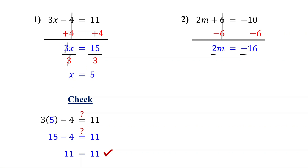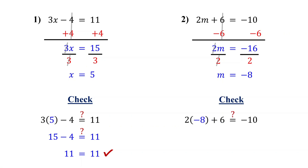Next, divide both sides by 2 to isolate m. On the left, the 2s cancel out, leaving m by itself. On the right, we get negative 8. So the solution is m equals negative 8. To double-check, plug in negative 8 for m in the original equation and simplify. 2 times negative 8 is negative 16, and negative 16 plus 6 is negative 10. Both sides match, so our solution is correct.